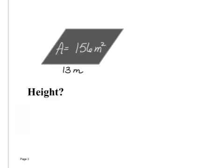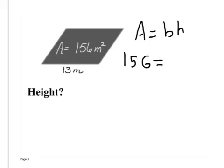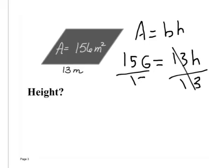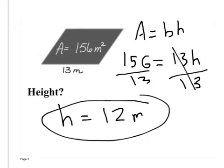All right, here they give us this shape. They tell us what the area is, they tell us what the base is, we gotta find the height. So what I need to do is write the formula: area equals base times height. Plug in what I know. Well, I know the area, right? 156. I know the base, right? Height is the only thing I don't know. So I divide by 13 to get h by itself. 156 divided by 13, h is 12 meters. Now be careful, if you don't write meters squared, it's not area, it's a single unit, so it's meters.